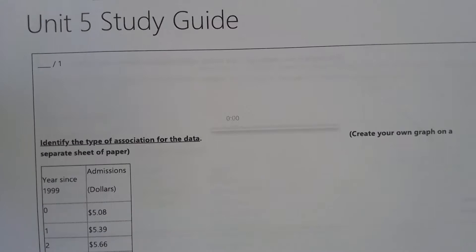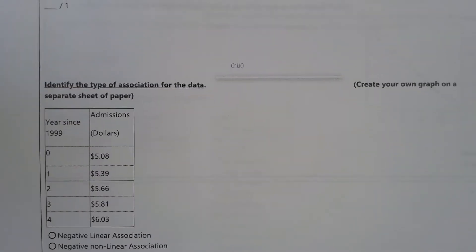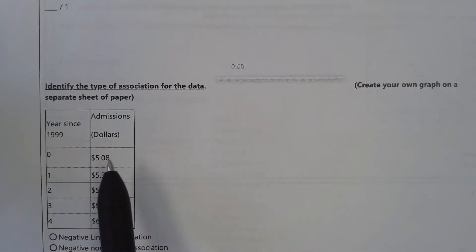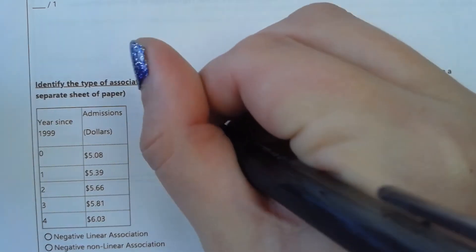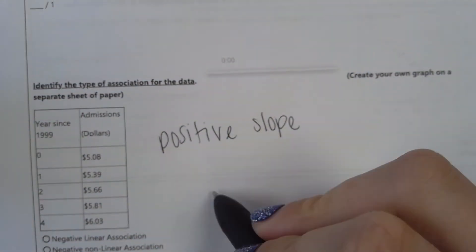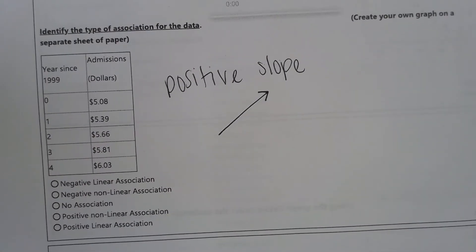Question 1 says identify the type of association for the data and create your own graph on a separate sheet of paper. If you notice our years are going up by ones and then the emissions in dollars are increasing as well, so we know that this is going to be a positive slope — a line that is increasing.